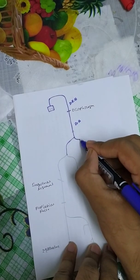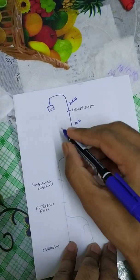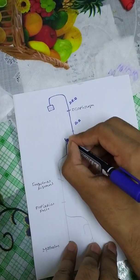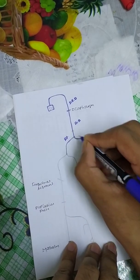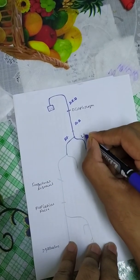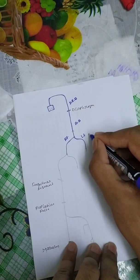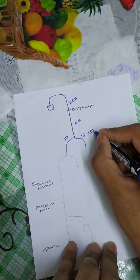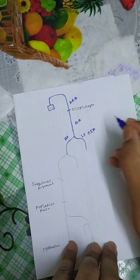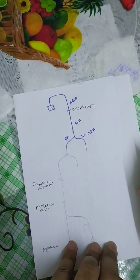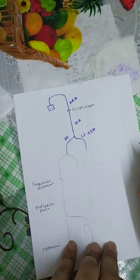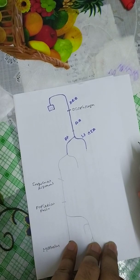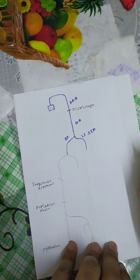The name of this vessel is the right and left common iliac artery. These are the terminal branches — the right and left common iliac arteries.